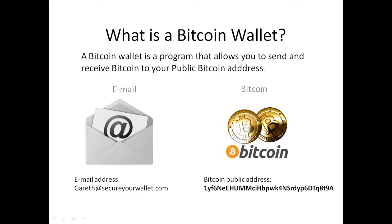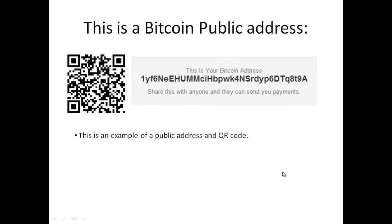Going back to the email analogy: if you want to send email securely, you need a password that only you know to log on to your email account and send emails from your address. In Bitcoin, you have a private key which allows you to unlock your public address — only you can unlock the funds. You also have a wallet password which you create when you store your wallet, and this allows you to send Bitcoin from that address.